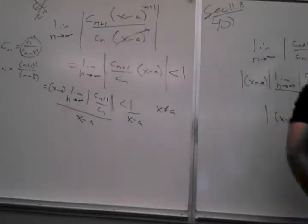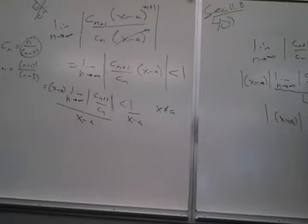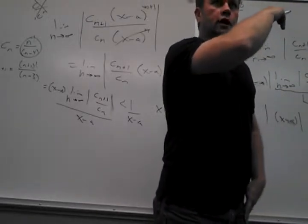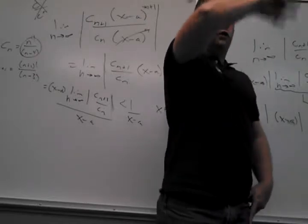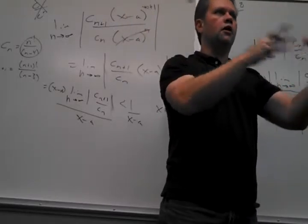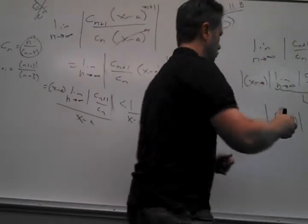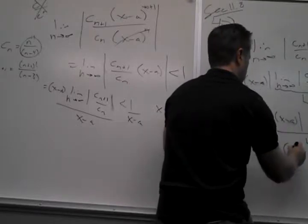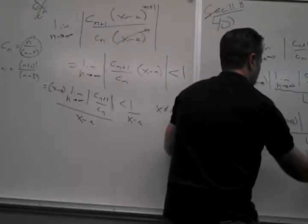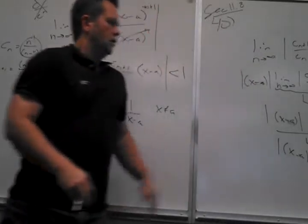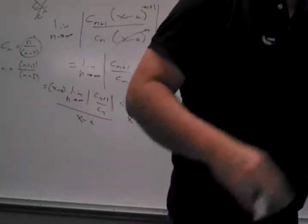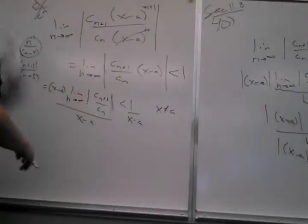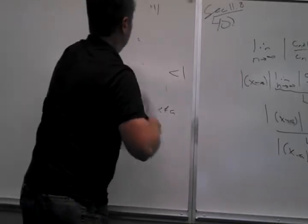Remember getting to the end of one of these problems and you get something like this? Maybe it's x minus 1 or something. And then what do you do next? You divide by 3. And then do the whole thing where you rewrite the absolute value inequality. So if I do divide by this L... the weirdness here is... and that's maybe the weird part. In general, the 1 over the limit of a ratio...